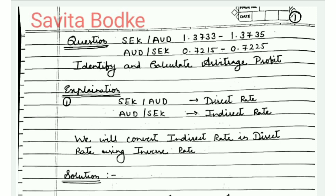They have also given you the AUD/SEK rate — this is an indirect rate. The first rate given is the direct rate, and the second is the indirect rate. For AUD/SEK, the bid rate is 0.7215 and the ask rate is 0.7225.